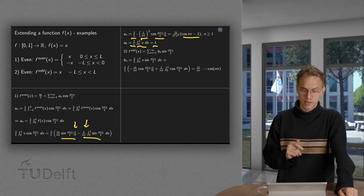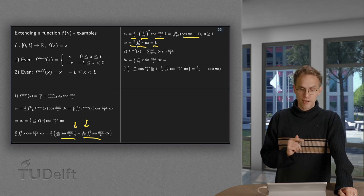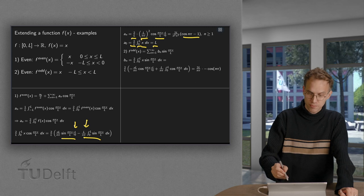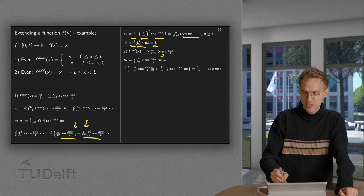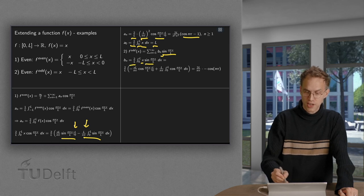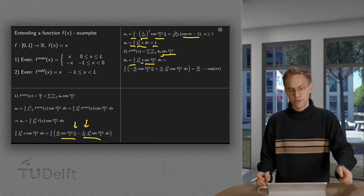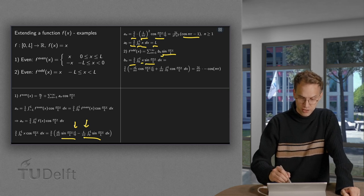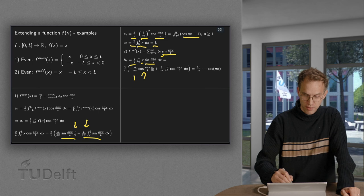We're going to plot it in a minute. First, we make the Fourier series of the odd extension. In that case, we only have sines, and the b_n's are given by 2 over l times f of x times the sine. So again, we have to use integration by parts.